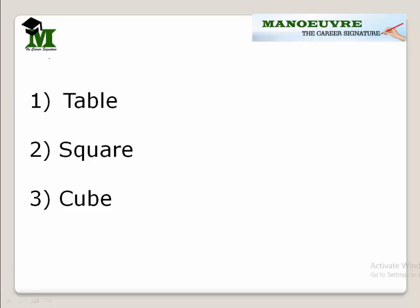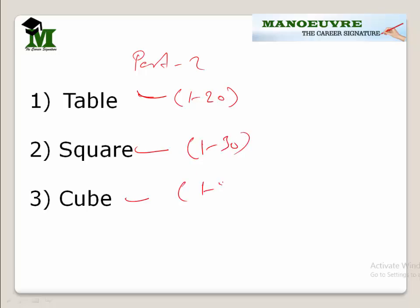Hi guys, welcome to MANUEL. This is speed math part 2, which covers tables, squares, and cubes. So tables you're supposed to memorize from 1 to 20, squares from 1 to 30, and cubes from 1 to 20. These are the homework for you people.